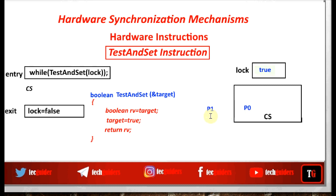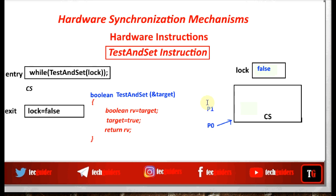Now what about progress? Suppose we have two processes P0 and P1. P0 sets lock to true and enters the critical section. P1 doesn't wish to enter — P1 is in the reminder section. P0 completes execution and sets lock to false. P1 still doesn't wish to enter the critical section. Suppose P0 needs to enter the critical section again — since lock is false, P0 can again set lock to true and enter. A process in the reminder section that is not wishing to enter is not blocking a process that wants to enter. So progress is guaranteed.